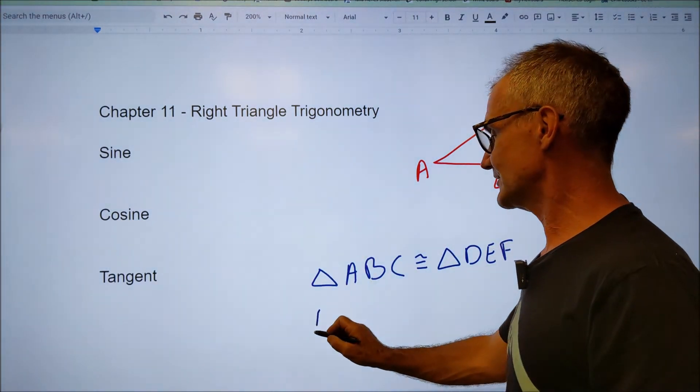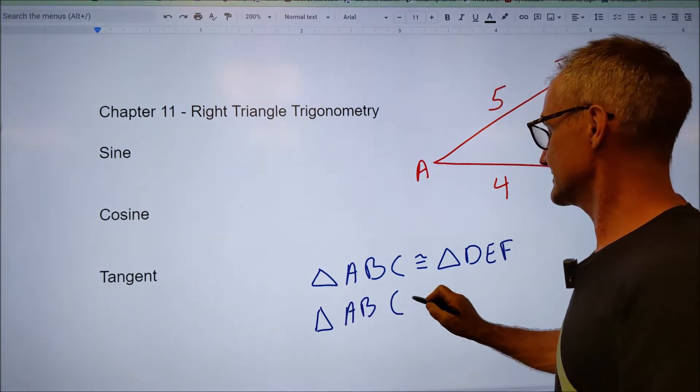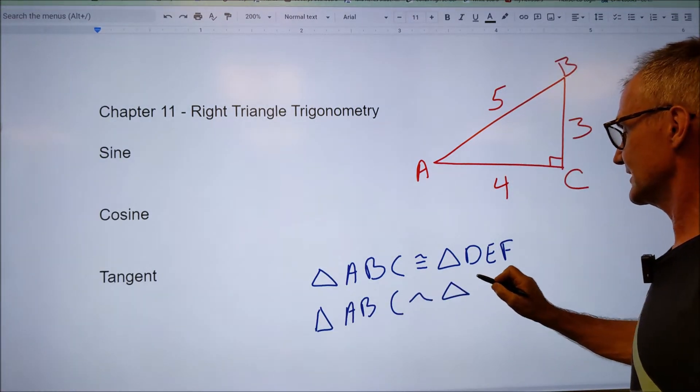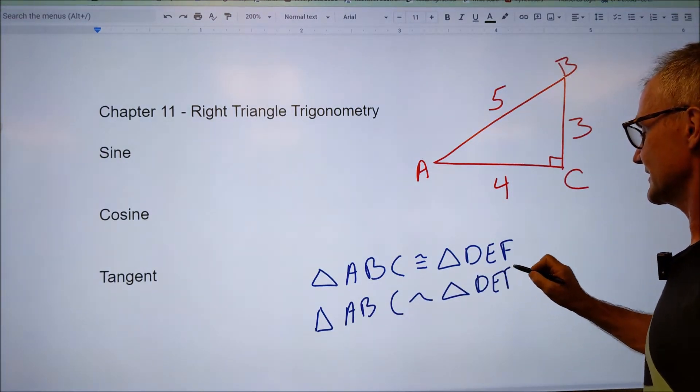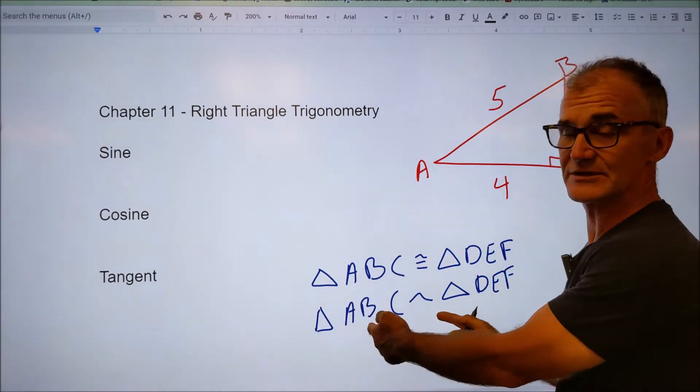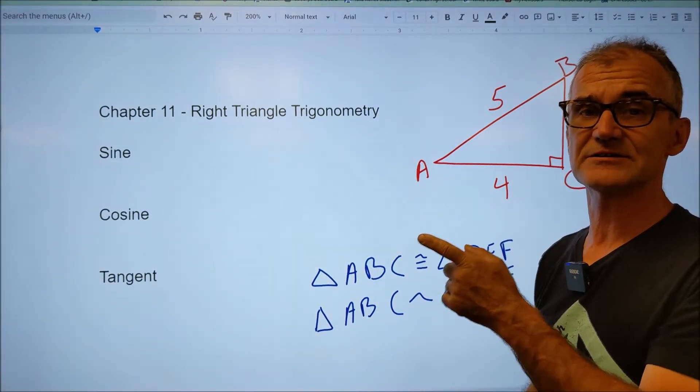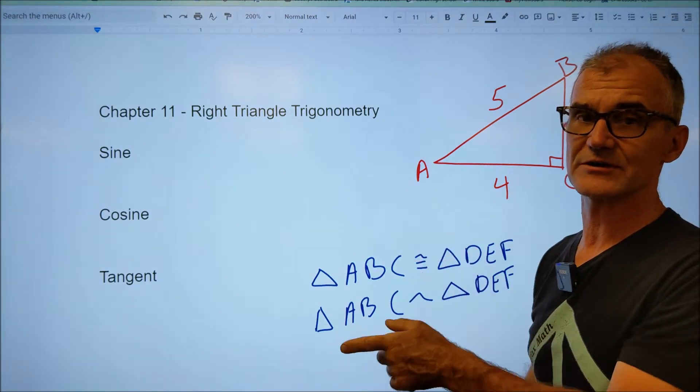However, if I have triangle ABC is similar to triangle DEF, that means these two triangles are similar, and similar means the ratios of sides are the same, and the measure of the angles are the same.